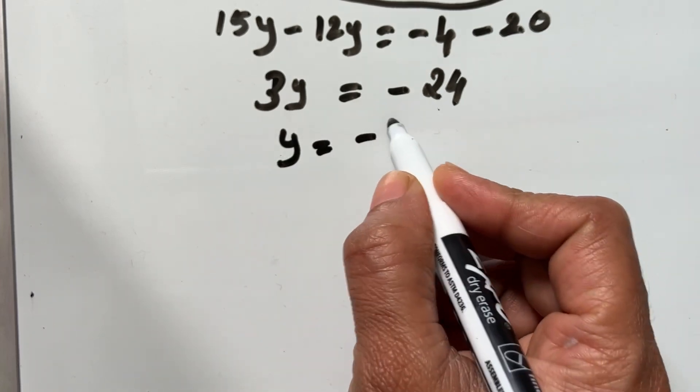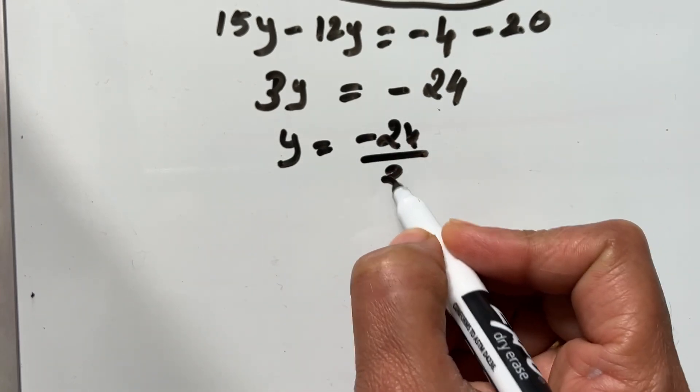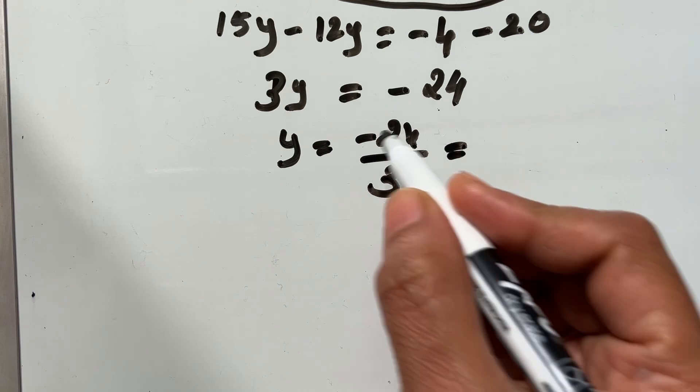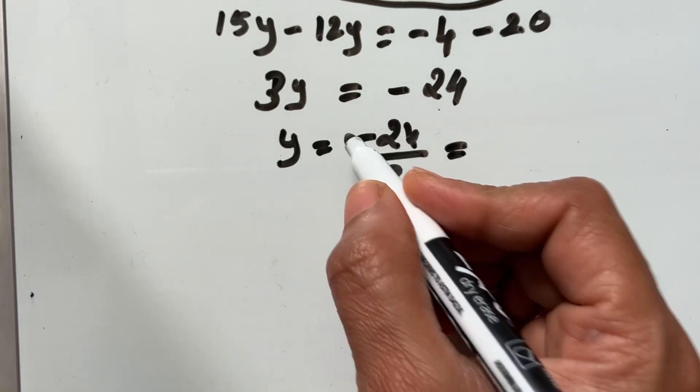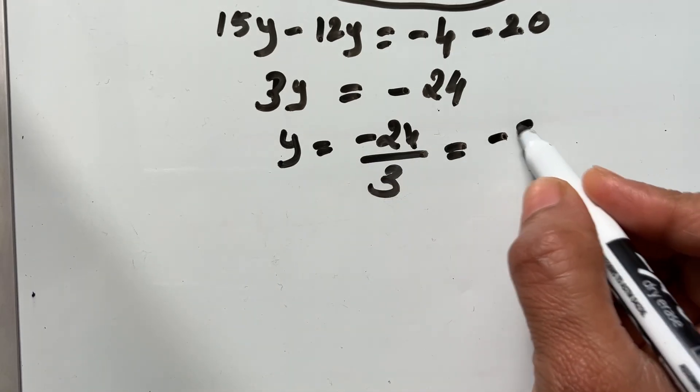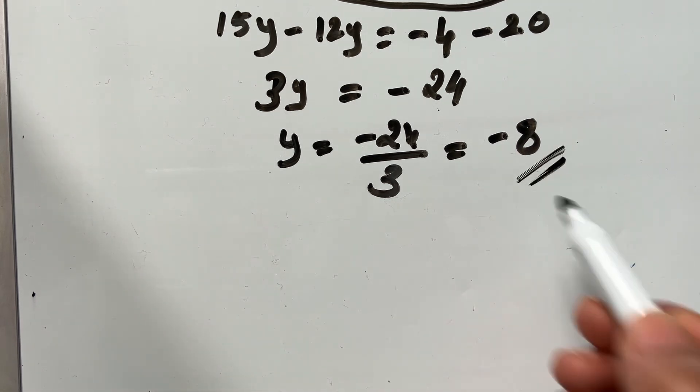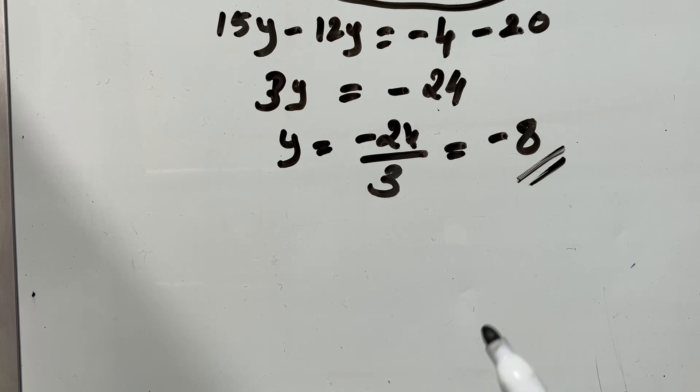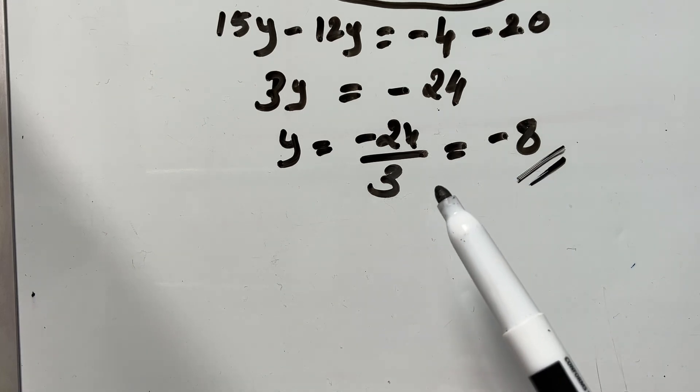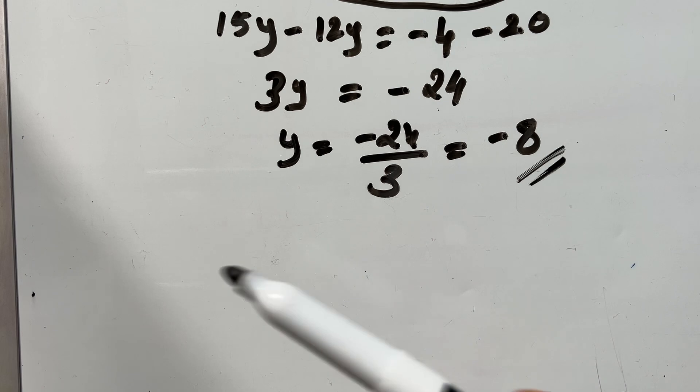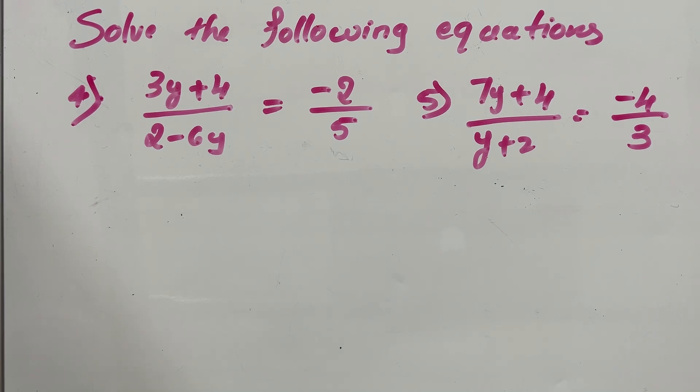3y is equal to negative 24. So, y should be negative 24 divided by 3. Negative 24 divided by 3 is negative 8. So, y is negative 8. Put this value of y in the given equation and check whether both right and left hand sides are equal or not. Let's go to our next question.